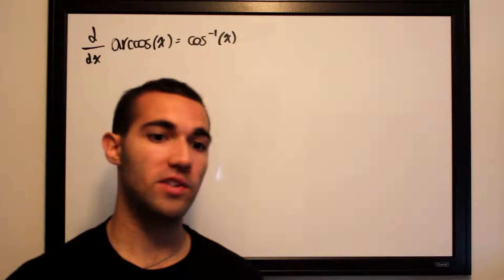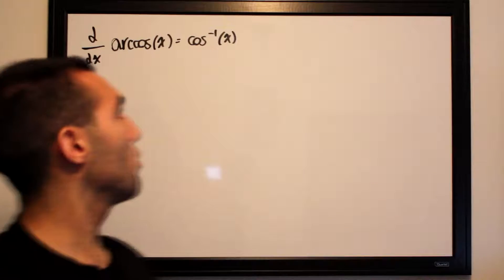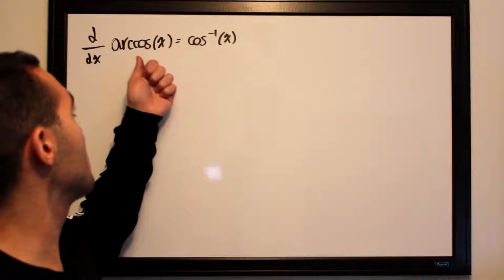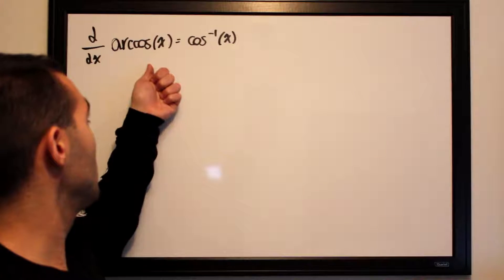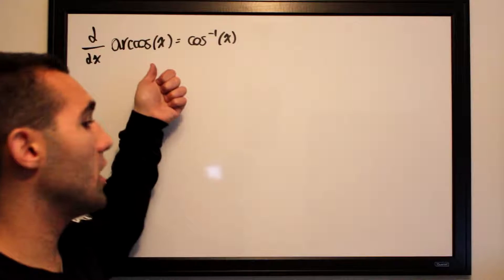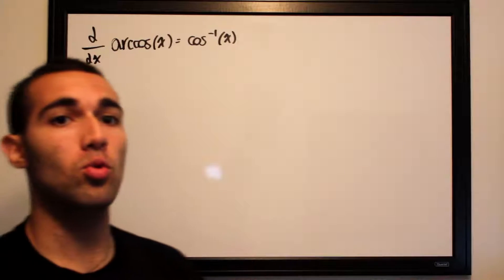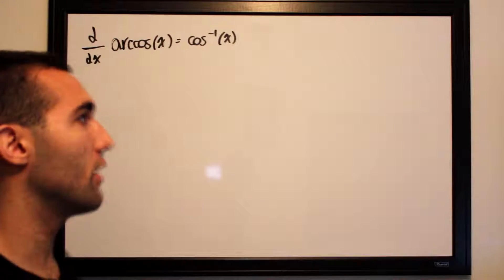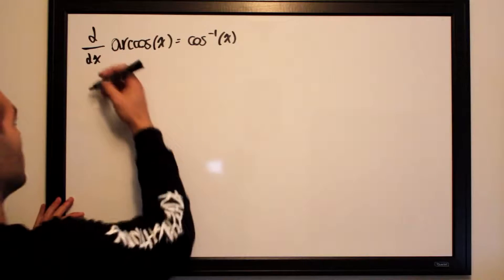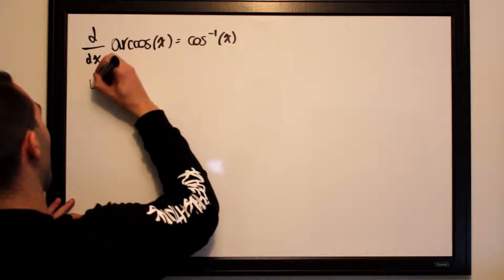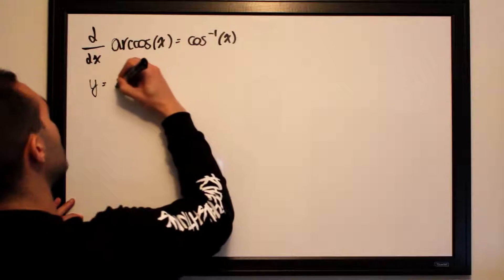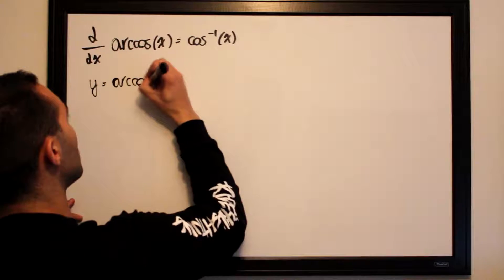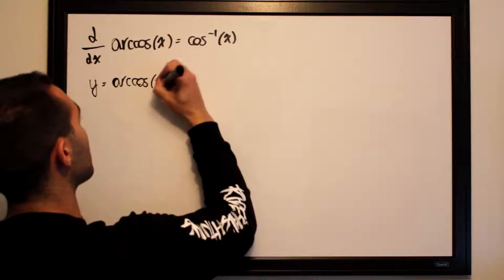I will lead you through it step-by-step. The first thing we're going to do is set the function arc cosine of x equal to y. So y is equal to arc cosine of x.